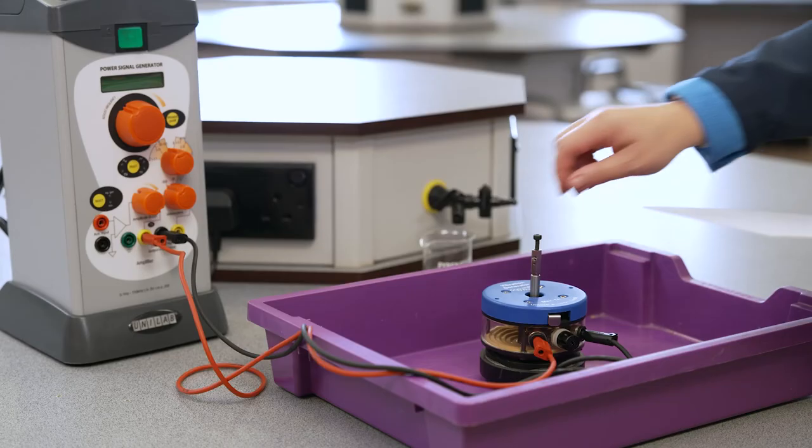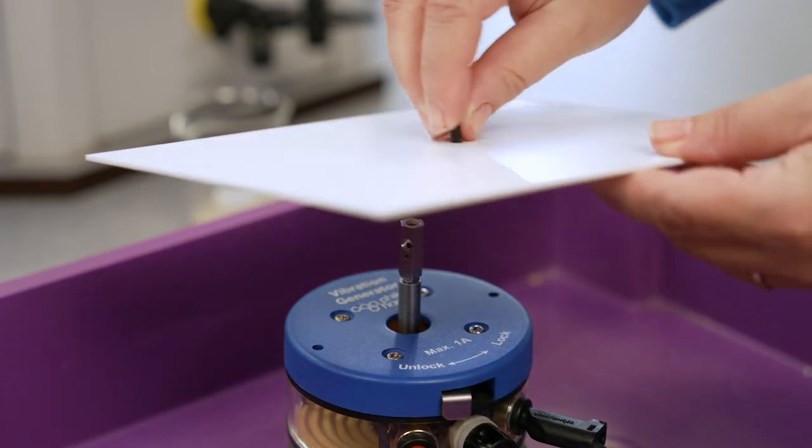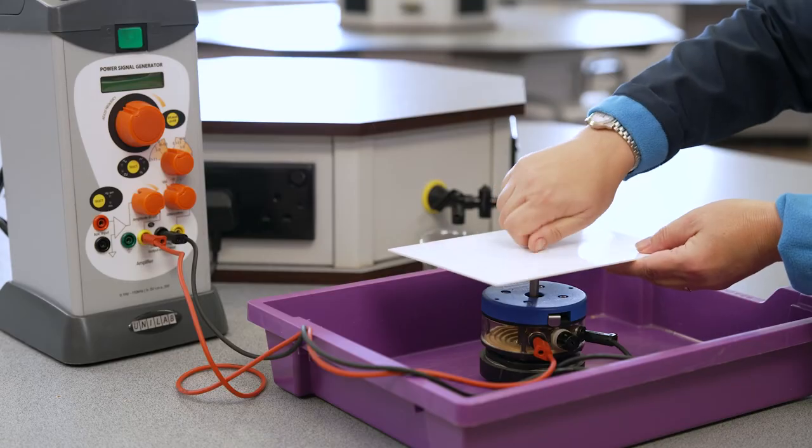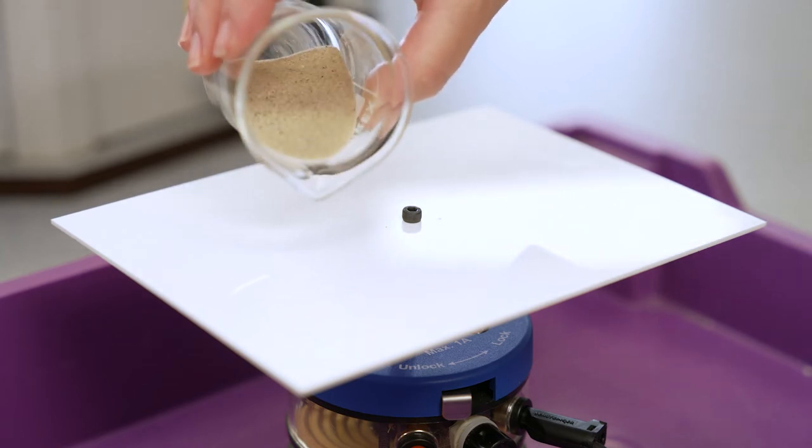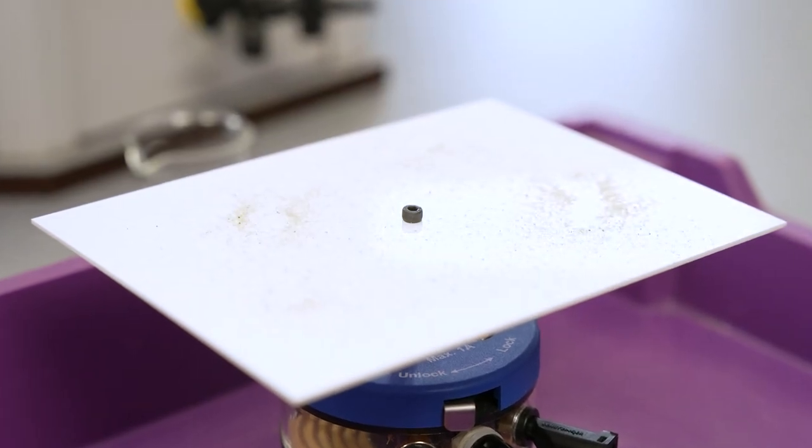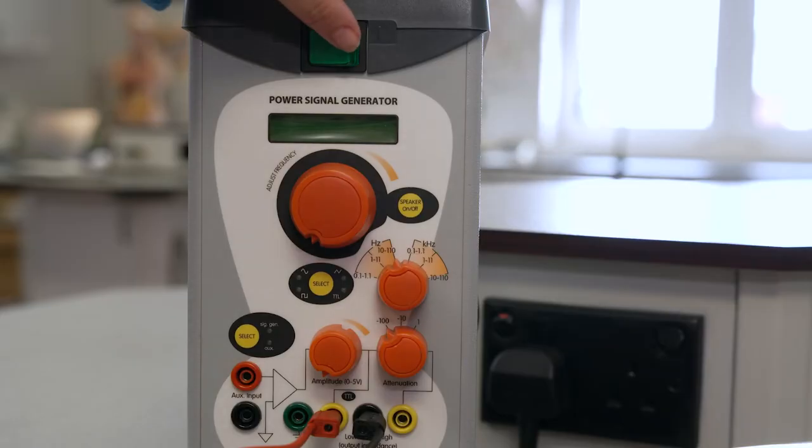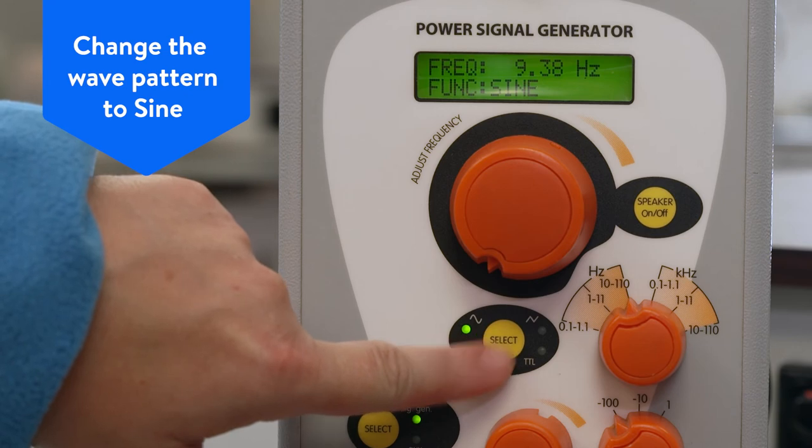Screw the Chladni plate onto the armature and sprinkle lightly with any freely running powder. In our experiment we're using sand. Turn on the power signal generator allowing a few seconds for it to power up. Select sine wave.